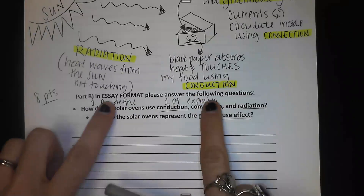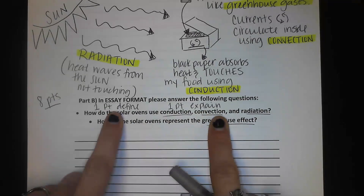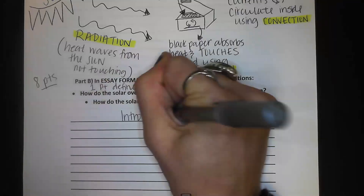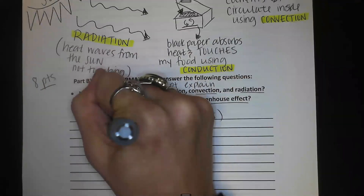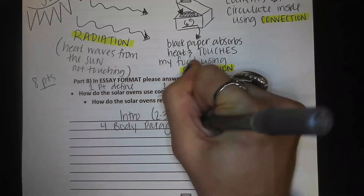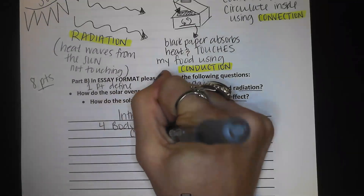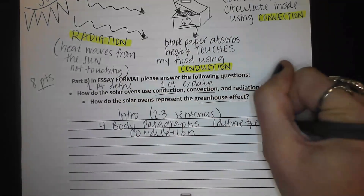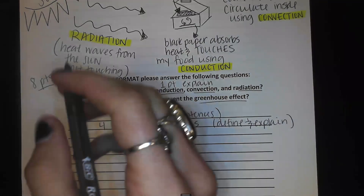One point for explaining, one point for defining — for convection, conduction, radiation, and the greenhouse effect. You should have an intro of two to three sentences explaining what you did, then four body paragraphs — one for each form of heat transfer — where you define and explain each one.